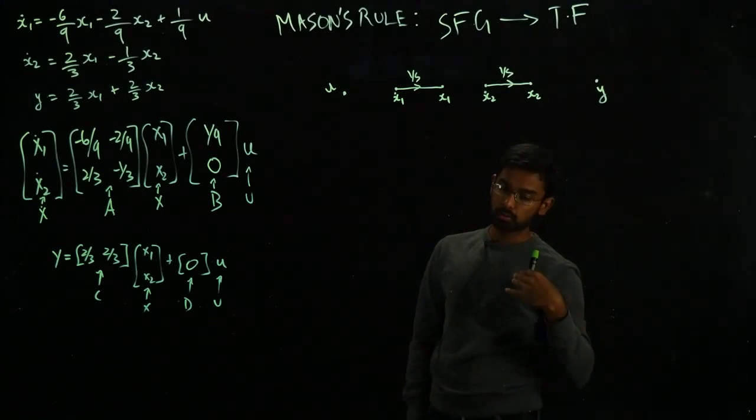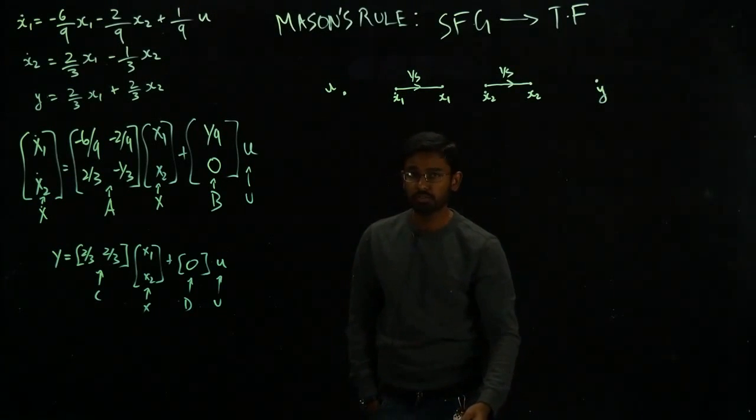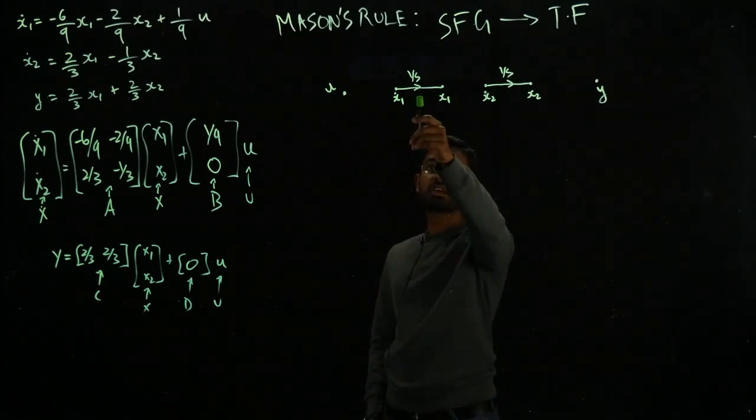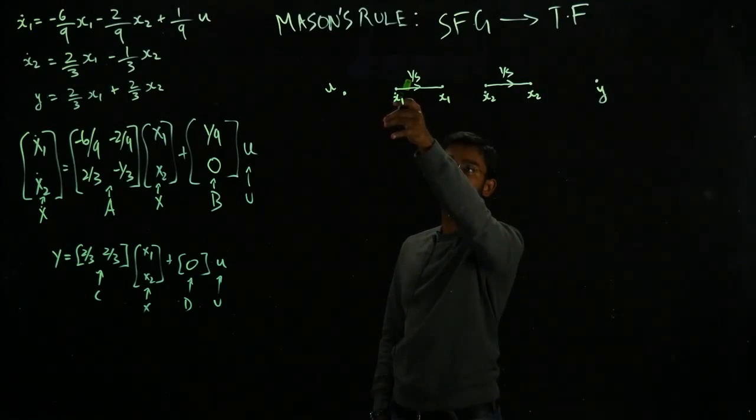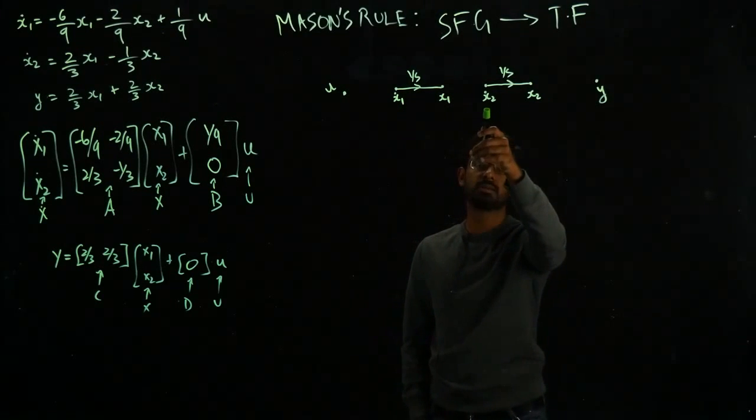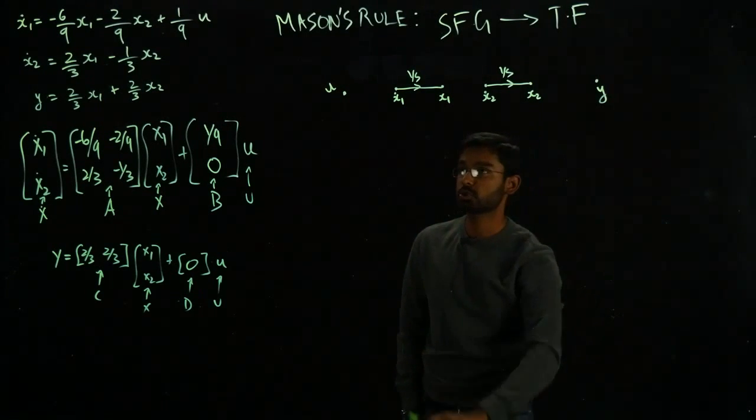We are going to try to go to the transfer function representation which is in the Laplace domain. So 1 over s is just the integrator in the Laplace domain. It goes from x₁ dot to x₁ and similarly x₂ dot to x₂.